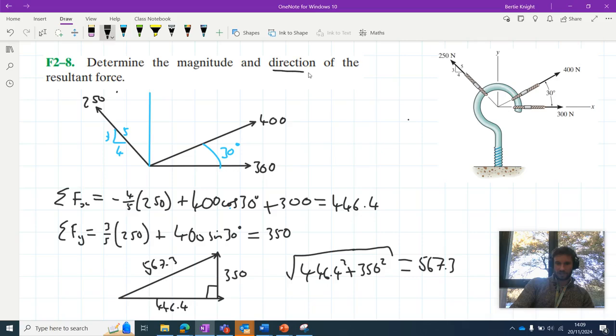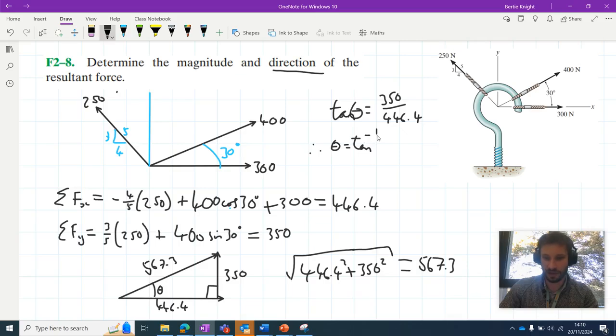We're also being asked to determine its direction. So we can determine its direction relative to the horizontal here. Evidently, we can use any trigonometric ratio we like now, since we have all three sides of this triangle. Let's pick tan. So in this case, the tan of theta, you know what, let's write this up here, just because there's more space. We can say the tan of theta is equal to the opposite over the adjacent. In this case, the opposite is 350. The adjacent is 446.4. Therefore, if I take the inverse tan of both sides, I can say that theta is equal to the inverse tan of 350 over 446.4, which when I bung in my calculator, that gives me 38.1 degrees.